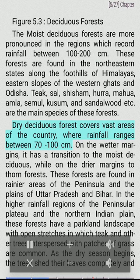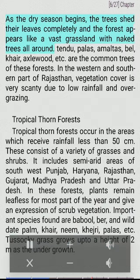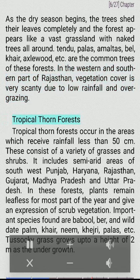Dry deciduous forest covers vast areas of the country where rainfall ranges between 70 to 100 cm. On the wetter margins it has a transition to the moist deciduous, while on the drier margins to thorn forests. These forests are found in rainier areas of the peninsula and the plains of Uttar Pradesh and Bihar. In higher rainfall regions of the peninsular plateau and the northern Indian plain, these forests have a parkland landscape with open stretches in which teak and other trees interspersed with patches of grass are common. As the dry season begins, the trees shed their leaves completely and the forest appears like a vast grassland with naked trees all around. Tendu, Palas, Amaltas, Bel, Khair, Axlewood are the common trees of these forests.